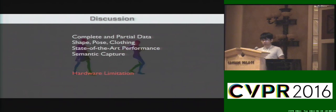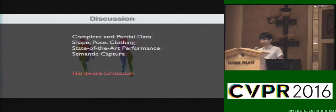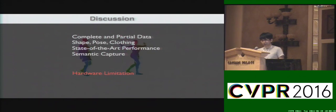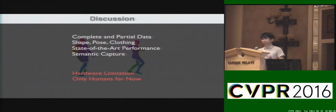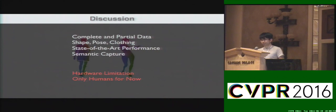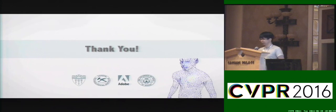Of course, like other neural networks, our performance is bounded by the hardware. For example, because of the memory limit of the GPU, the resolution of depth images cannot be very high. And we can only handle human correspondence now, because that's the only ground-truth dataset we can obtain online. Of course, we will expand our methods to other subjects in future work. Thank you.